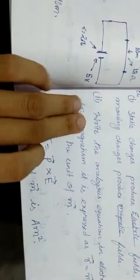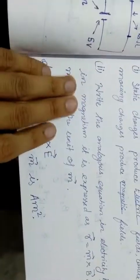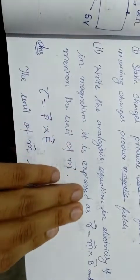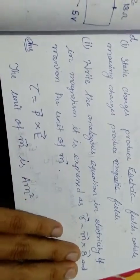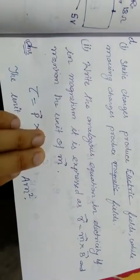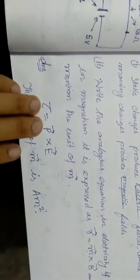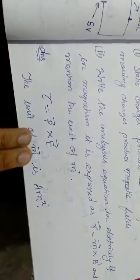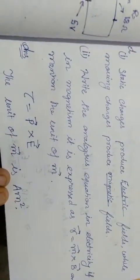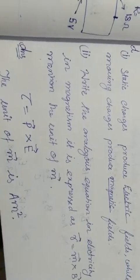The first question is: write the analogous equation in electricity if in magnetism it is expressed as R is equal to M cross P, and mention the unit of M. The torque is P cross E and the unit of M is ampere per meter square.